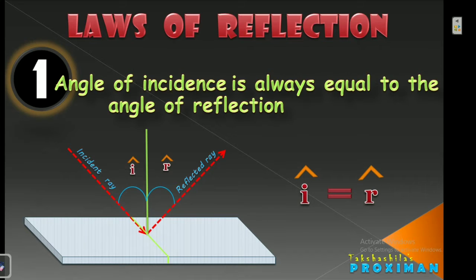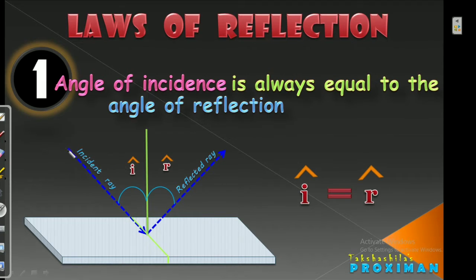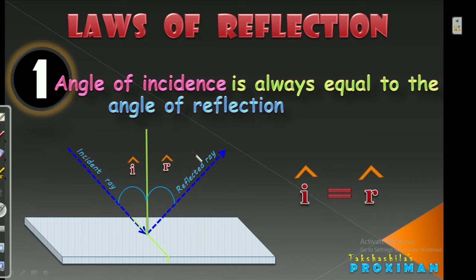Let us start with Law 1. It states that the Angle of Incidence is always equal to the Angle of Reflection. The angle made by the Incident Ray with the Normal is always equal to the angle made by the Reflected Ray with the Normal — that is Angle I equals Angle R. For example, if the Angle of Incidence is 30 degrees with the Normal, then the Reflected Ray also makes an angle of 30 degrees with the Normal.